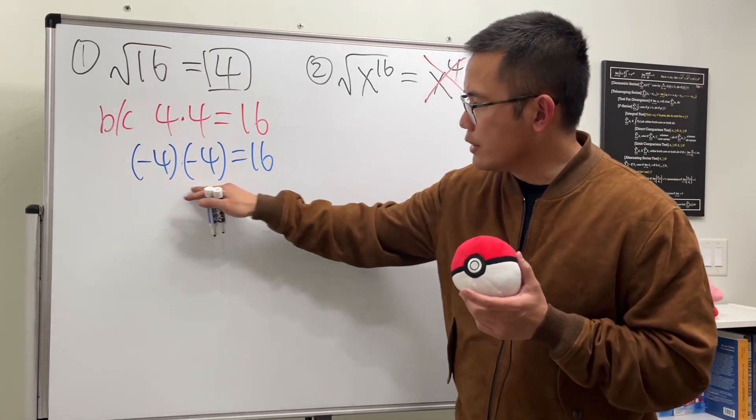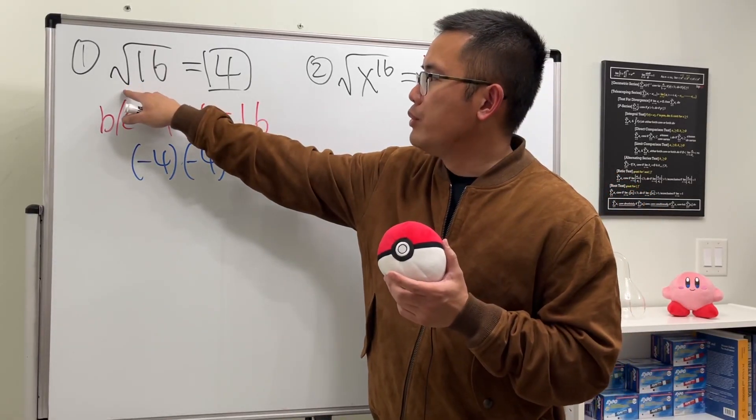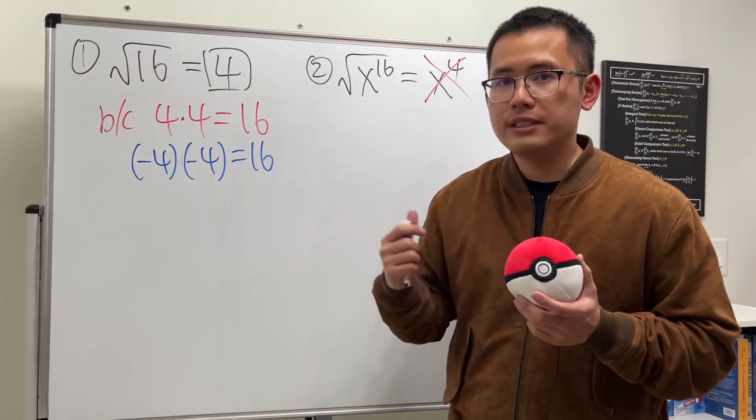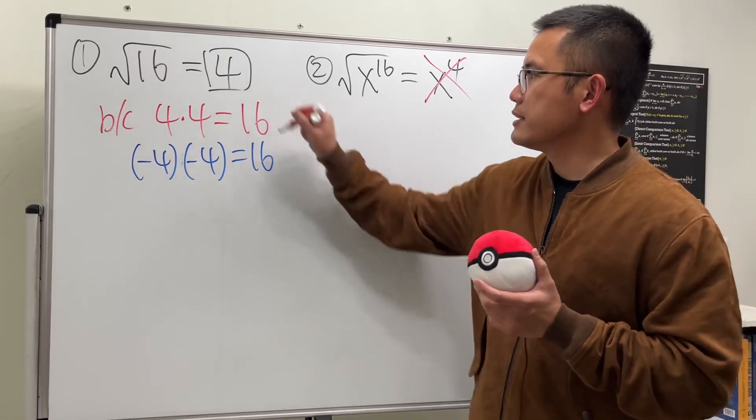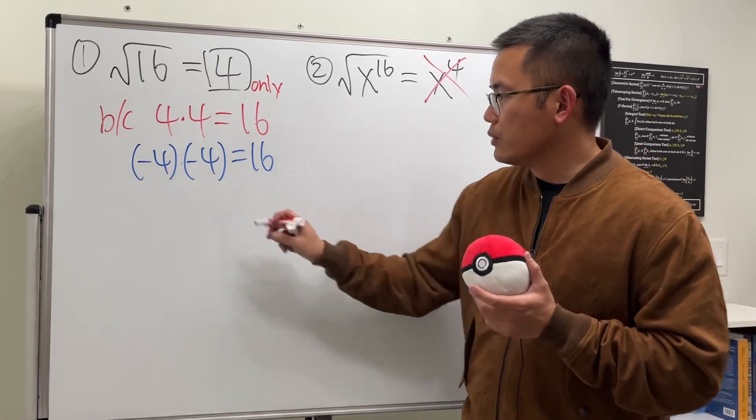Well, I agree with this right here, but when we are computing square root numbers, the output is defined to be just the positive answer. So in this case, the answer is just positive 4. We do not say this is true.